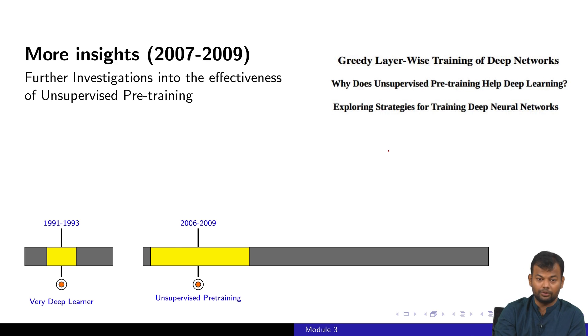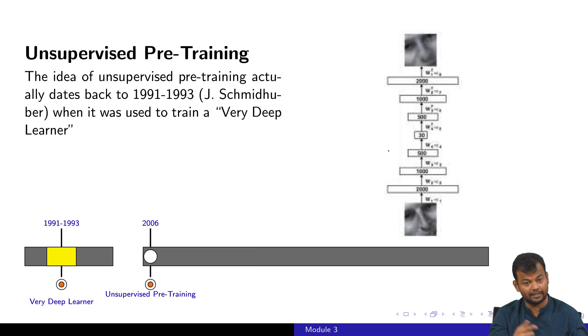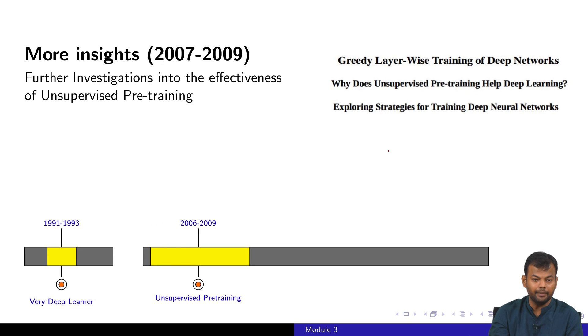From 2006 to 2009 people started gaining more insights into the effectiveness of this discovery by Hinton and others, which was unsupervised pre-training. They started getting insights into how you can make deep neural networks really work. They came up with various techniques, some of which we'll study in this course - how to initialize the network better, what's the better optimization algorithm to use, what's the better regularization algorithm to use, and so on. Many things started coming out in this period.